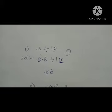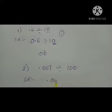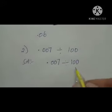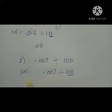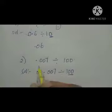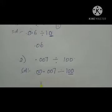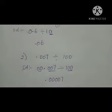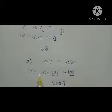Division by 100. Example: 0.007 divided by 100. Here, 2 zeros in 100. Move decimal point 2 numbers to the left. There are no numbers to the left, so keep 2 zeros: 0.00007. Answer: 0.00007.